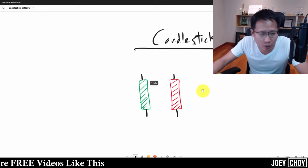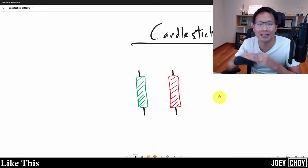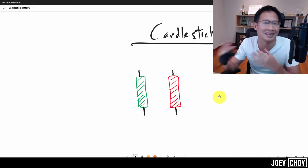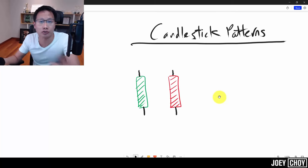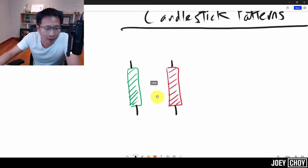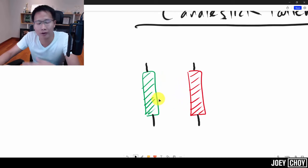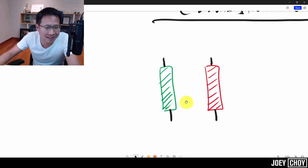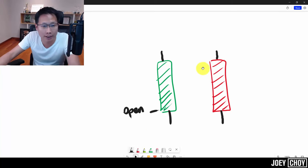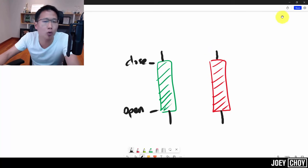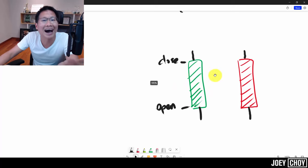Let me explain what a candlestick pattern is. Basically we are looking at what we call a daily candlestick bar. Each day in the market for a particular stock or even the index, there is an opening price, a closing price, a day high, and a day low — four prices for a stock each day. These four prices give rise to a candlestick bar. A green bar means it opens lower — this is the opening price — and this is the closing price.